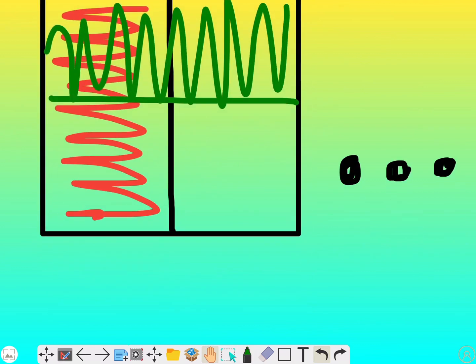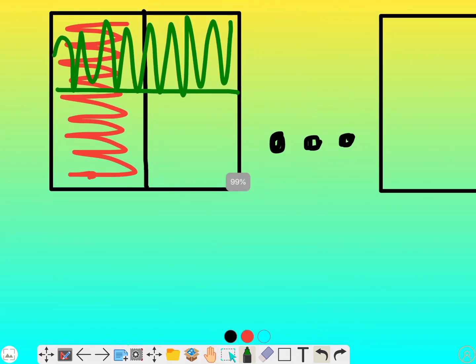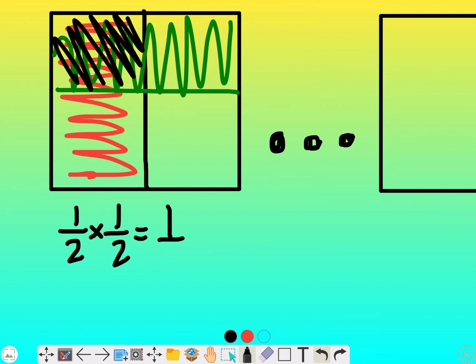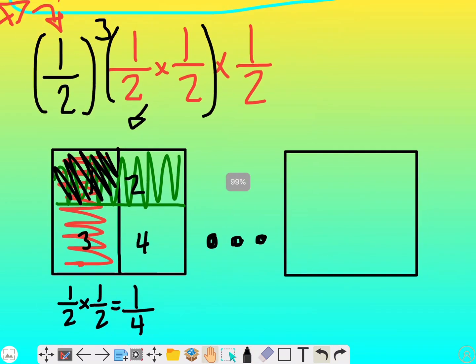So whenever I did this visual for one half times one half, one half of one half, I have one box that has both colors. So I have one box that's my numerator and I have one, two, three, four boxes that my pan of brownies is cut into. But I'm not done yet.